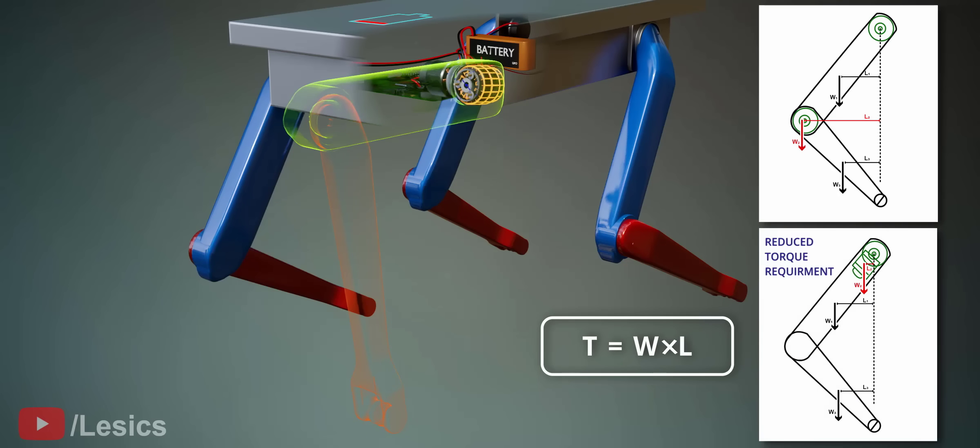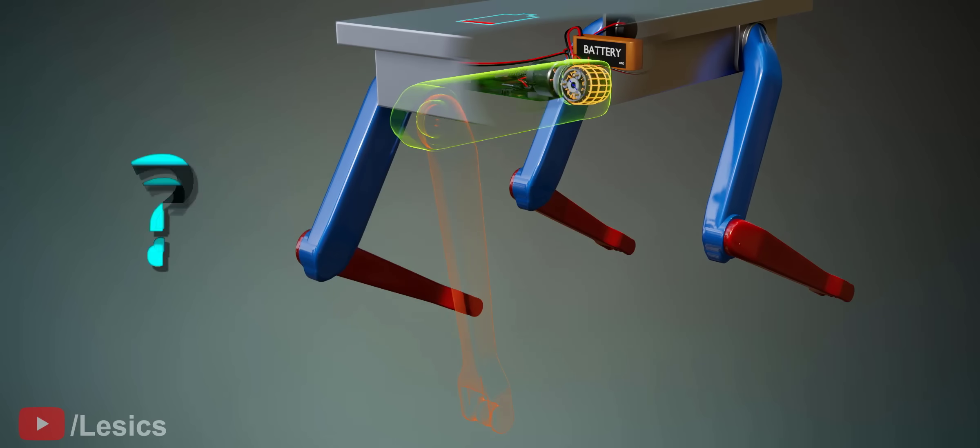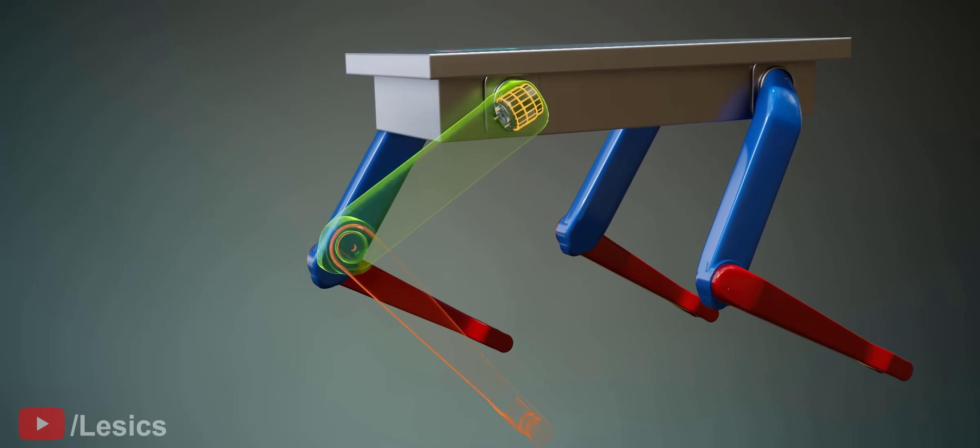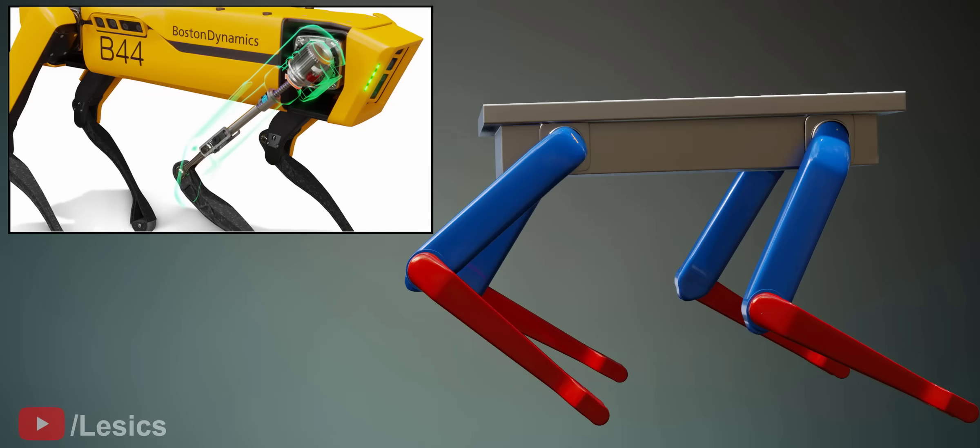You can reduce power required for this lifting just by moving the knee motor closer to the hip motor. Since the knee motor weight is closer to the hip motor, the torque required drastically reduces. However, how do we control the lower arm? It is far away from the knee motor. The answer is obviously a mechanism between the knee motor and lower limb.